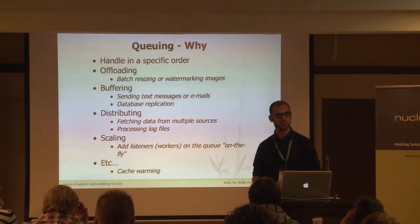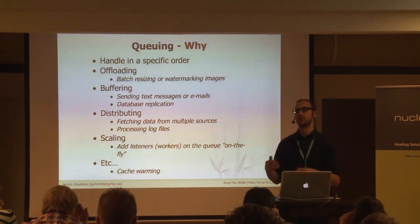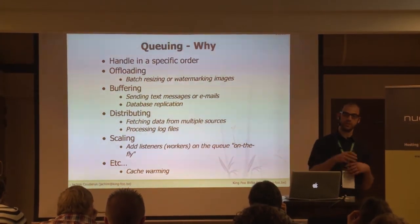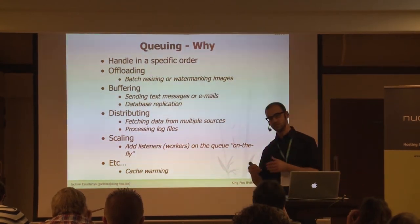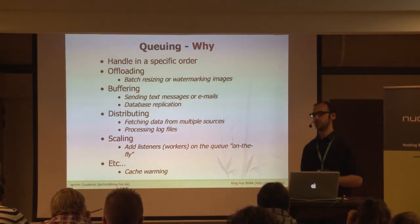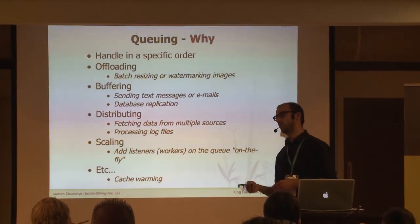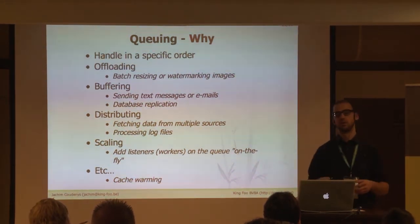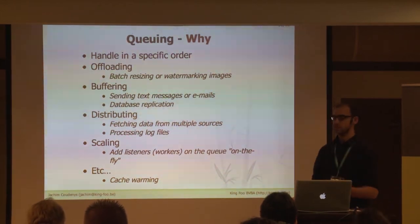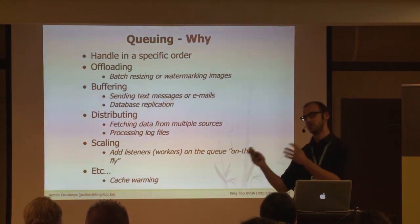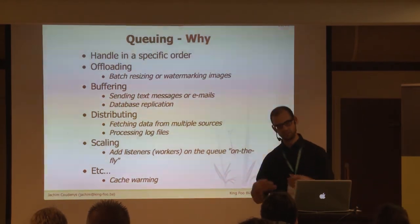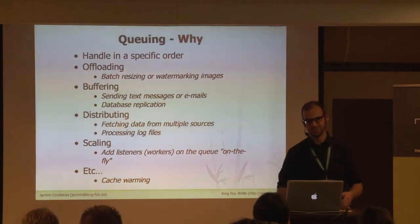Why would we need queuing? Queuing is good for handling things in a specific order. Like the post office example — the first in line gets the free desk. This doesn't necessarily mean they are completed in the same order, because one person might be buying stamps while another is just passing a letter. So it controls the order they are processed, but not how they are completed.